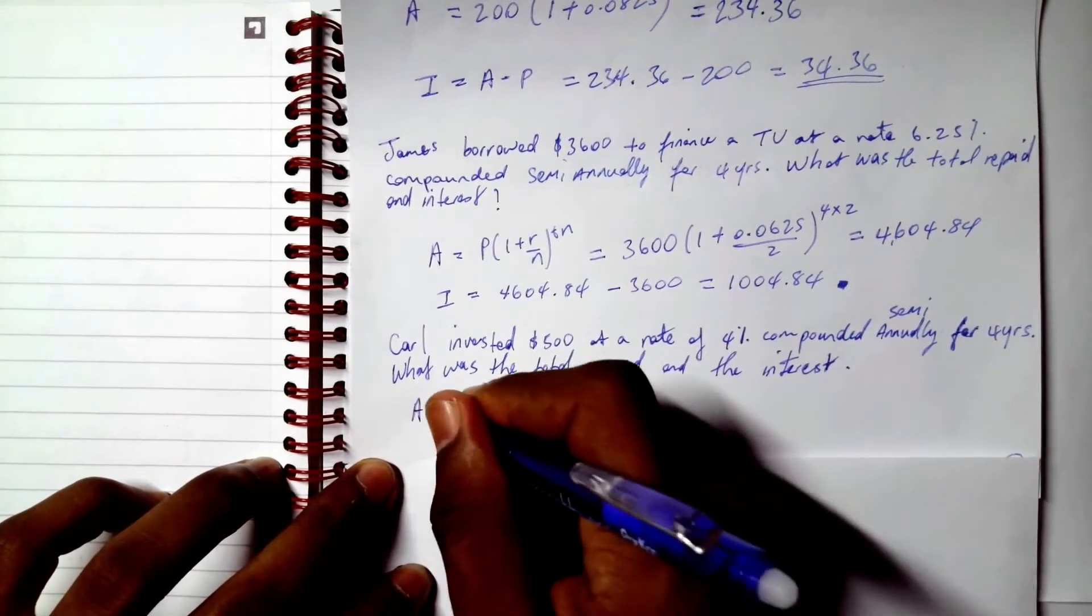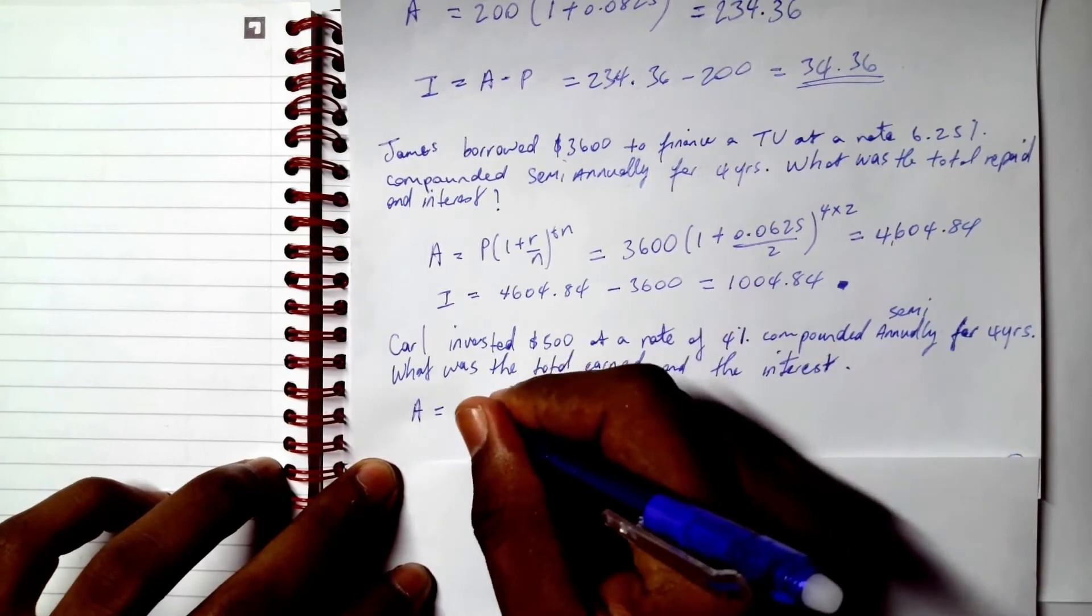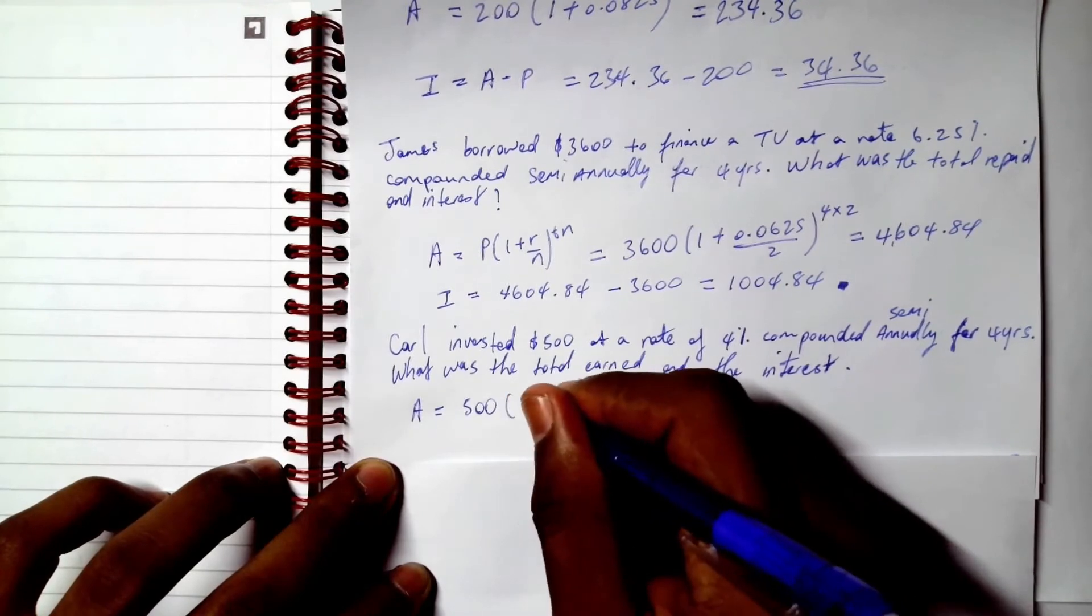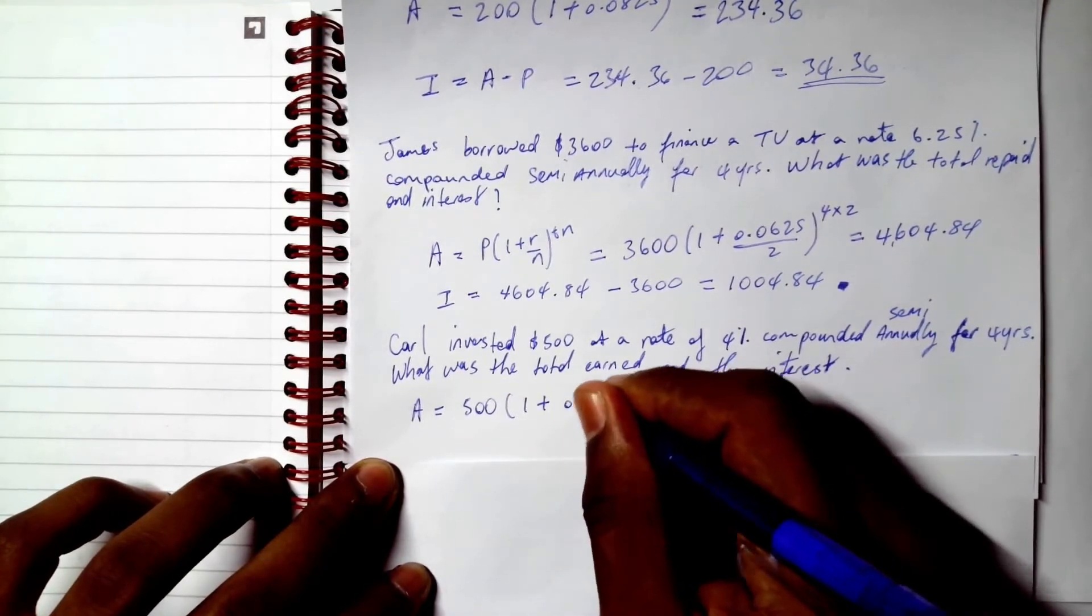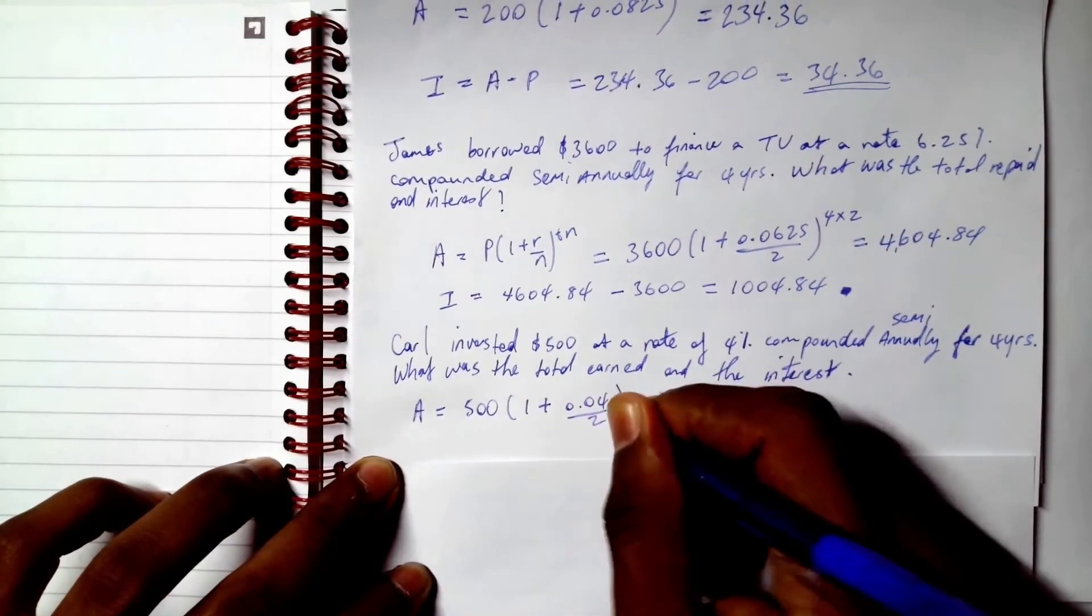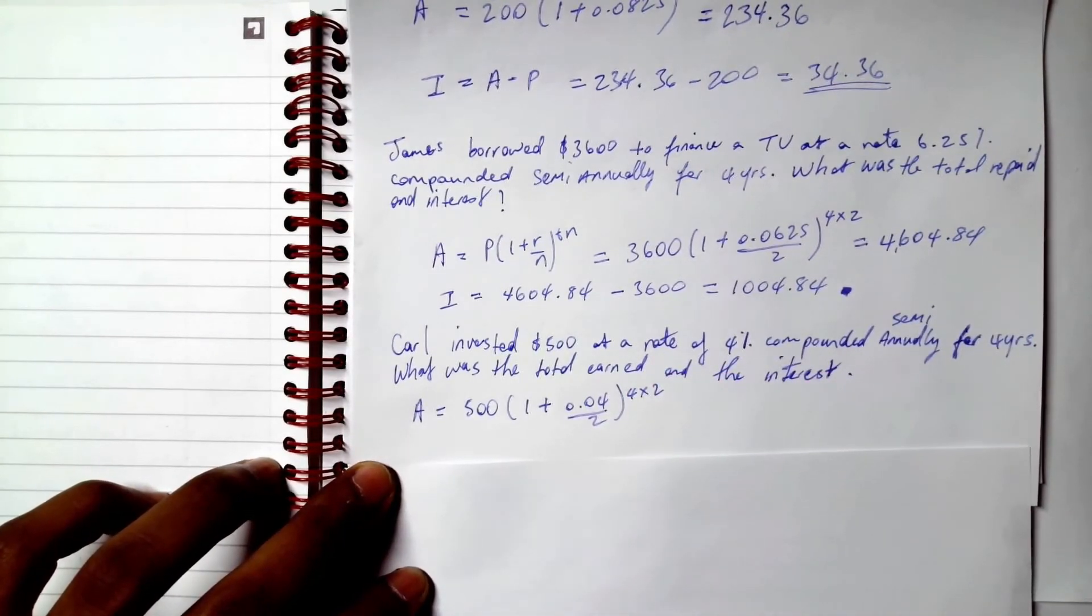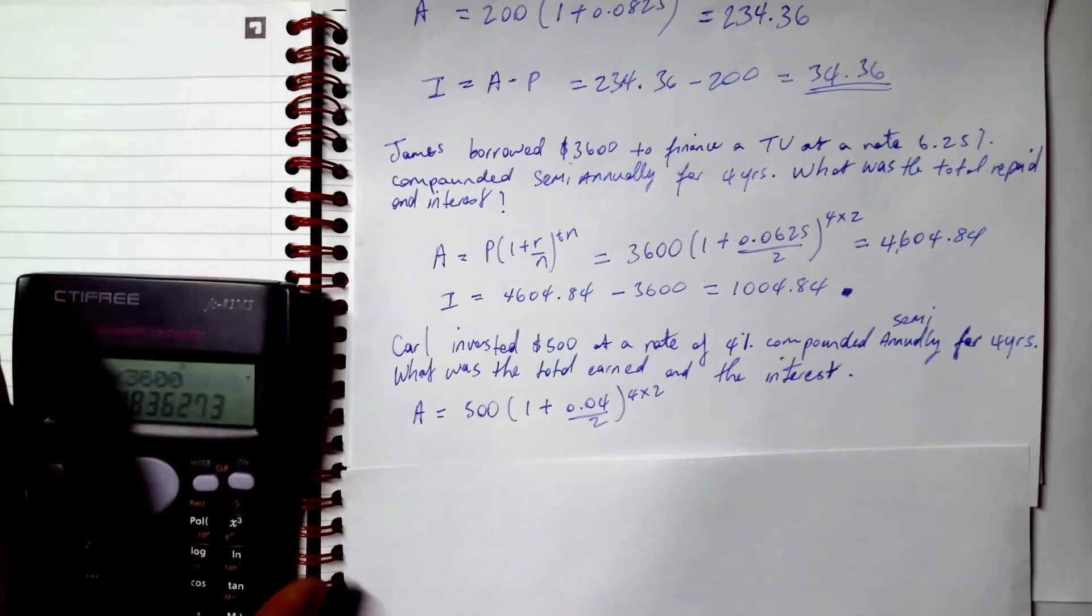All right, so our A will be equal to 500 multiplied by 1 plus 0.04 divided by 2 raised to the 4 times 2. All right, we get our calculator.